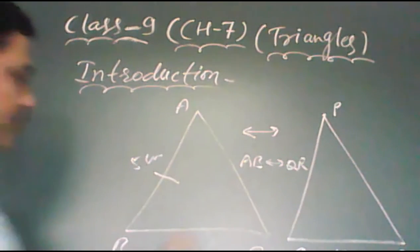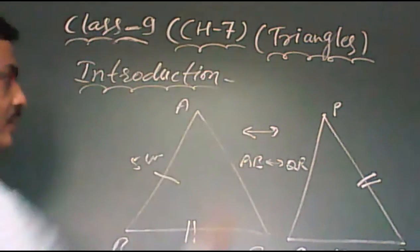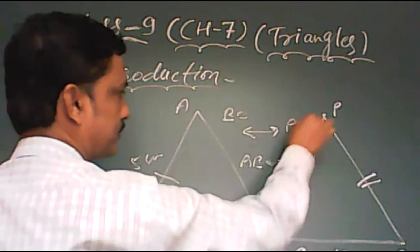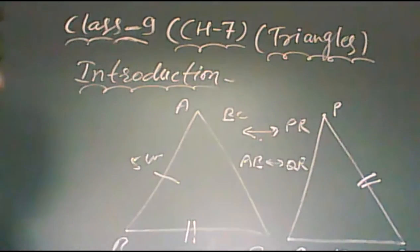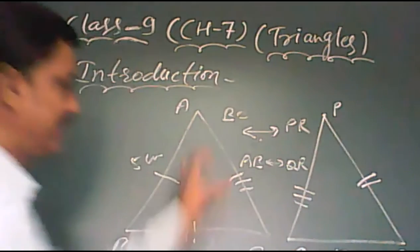If BC is equal to PR, it means BC corresponding to PR. And if AC is equal to PQ, AC corresponding to PQ.